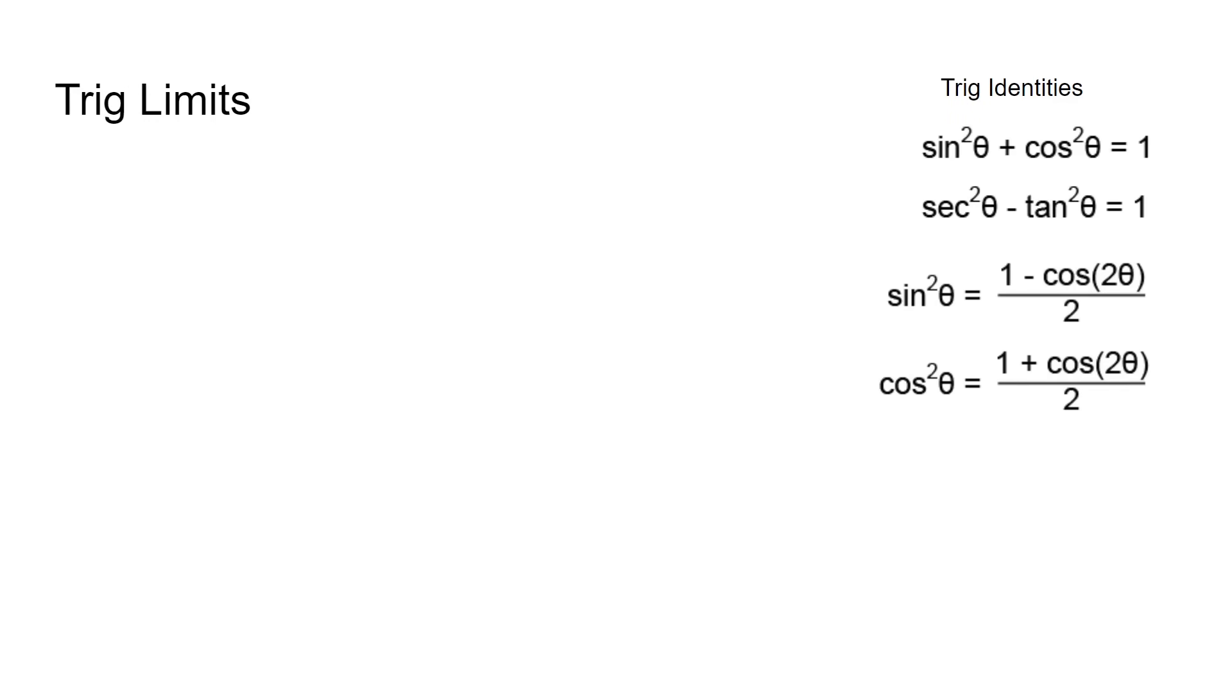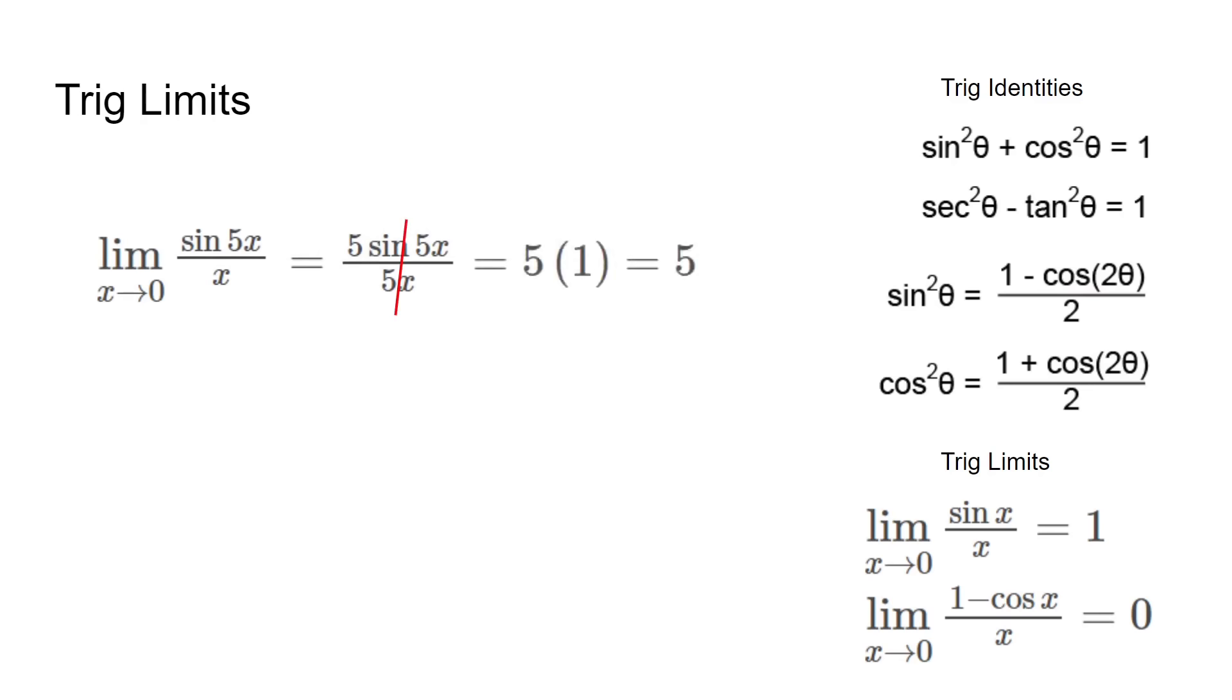There are also special rules for trig limits to 0 specifically. In this example, sin 5x over x, we would multiply by 5 over 5. We can apply the rule to cancel out the sin 5x over 5x part and get our answer, 5.